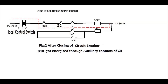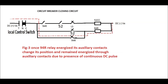As soon as the 94R relay operates, it will operate its auxiliary contacts and change their positions. It will then remain in the energized condition through its own 94R contact, as shown by the red dotted line. Therefore, no further DC pulse will go to the closing coil whether the circuit breaker is in the closed or tripped condition.